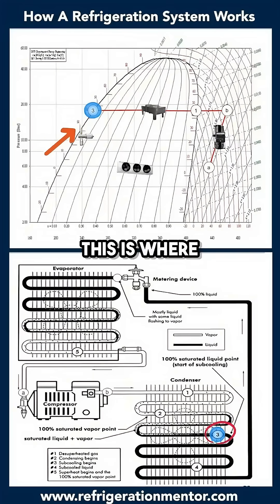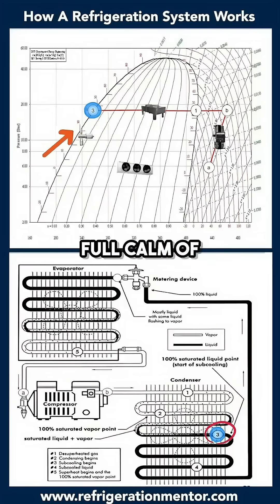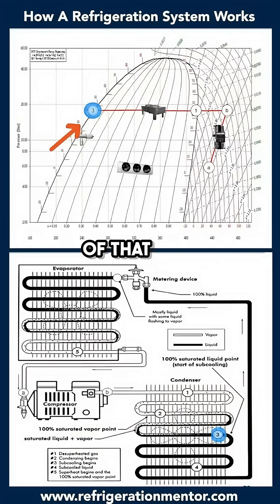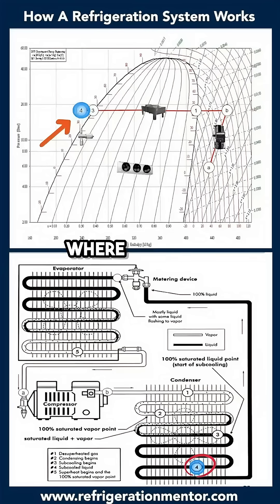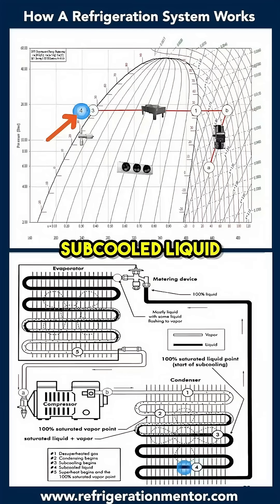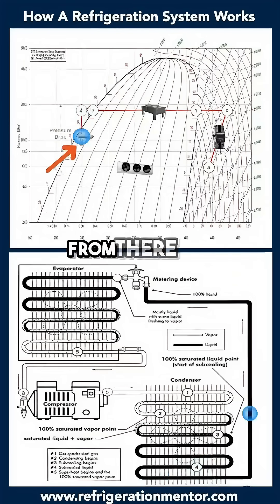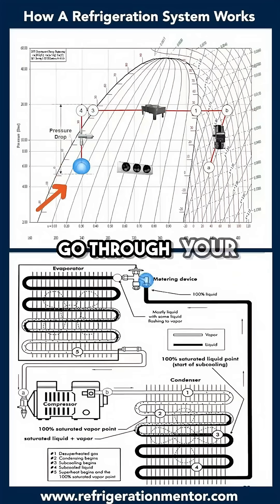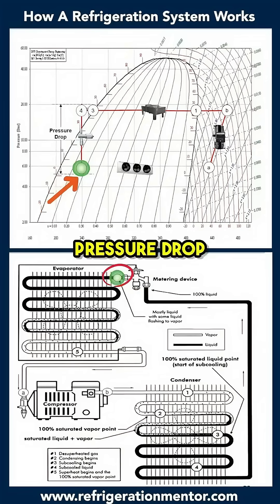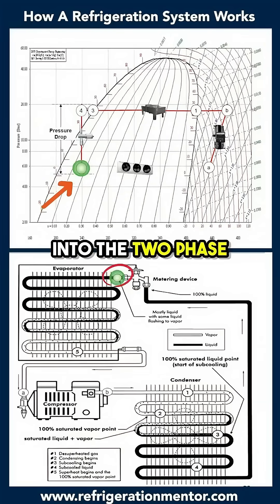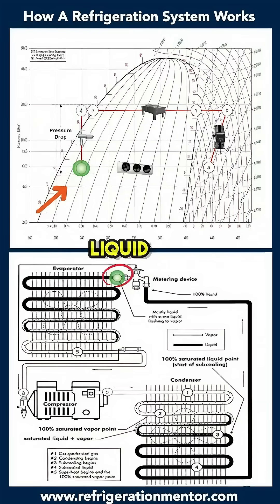By the time you hit that bubble point, this is where your subcooling begins. When you have a full column of liquid, anything on top of that is your subcooling — so this is where you have subcooled liquid. From there you go through your metering device; that pressure drop pulls you back into the two-phase region, where you have both liquid and vapor.